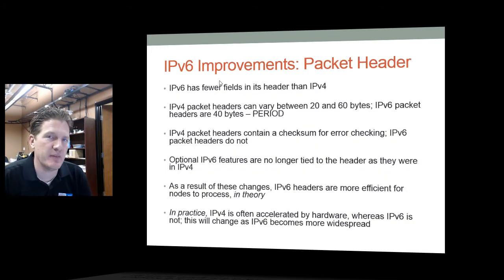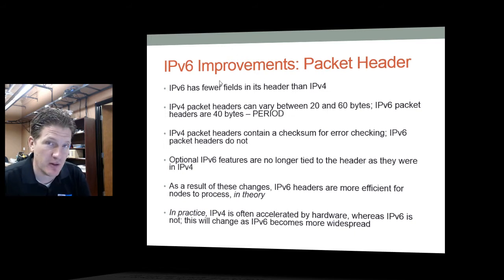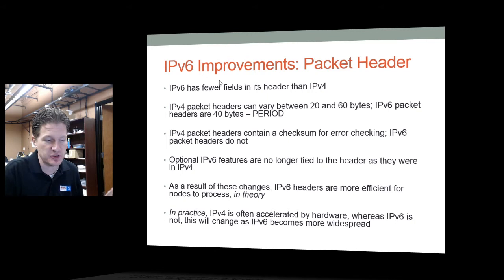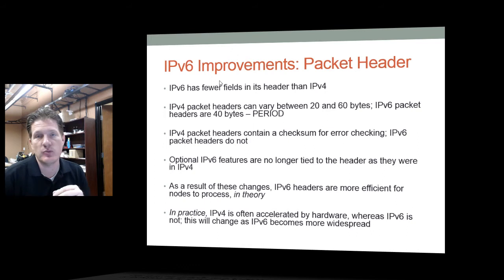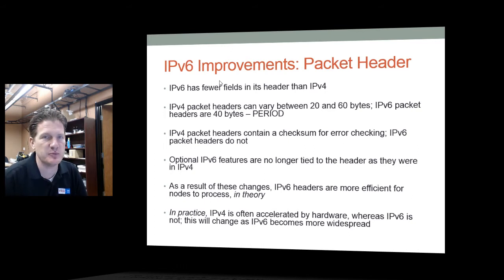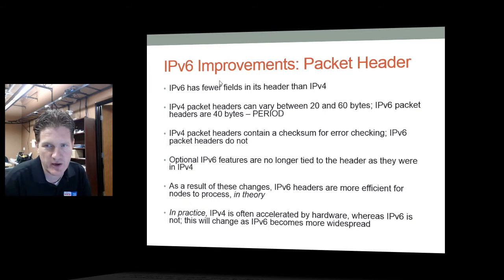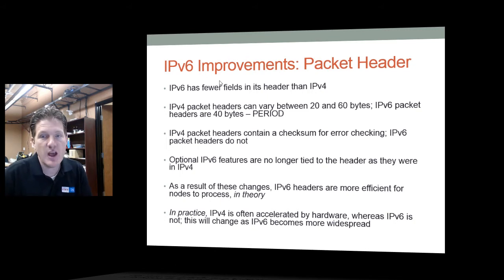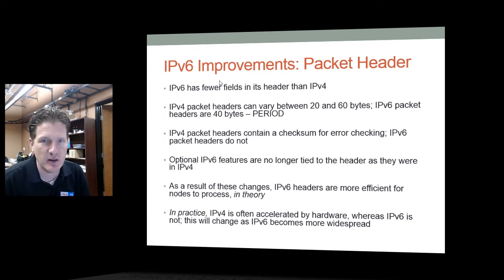The packet header in IPv6 has had significant improvement. IPv6 has fewer fields. Although IPv6 adds a 128-bit address (greater than the 32-bit consumed by IPv4), it removes fields that were unnecessary, so the total gain in header space is not as much as expected. An IPv4 header could be between 20 and 60 bytes, but an IPv6 header is always 40 bytes — so we're not adding a lot to the network payload by going to IPv6.